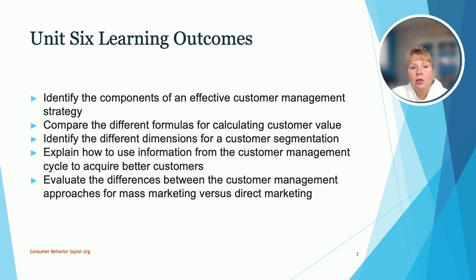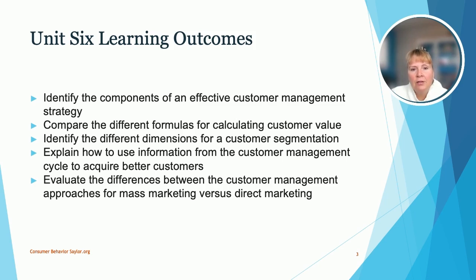Here are the Unit 6 learning outcomes: Identify the components of an effective customer management strategy. Compare the different formulas for calculating customer value. Identify the different dimensions for a customer segmentation. Explain how to use information from the customer management cycle to better acquire better customers. Evaluate the differences between the customer management approaches for mass marketing versus direct marketing.